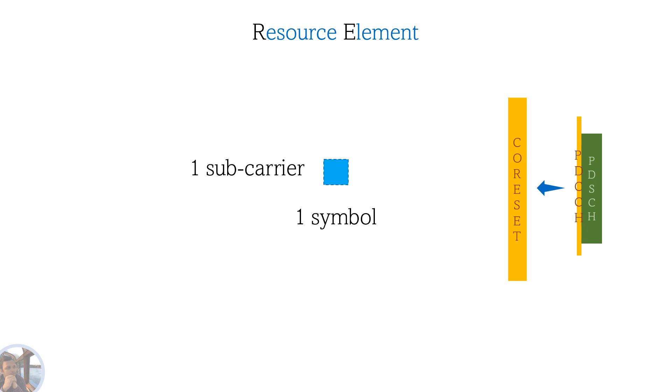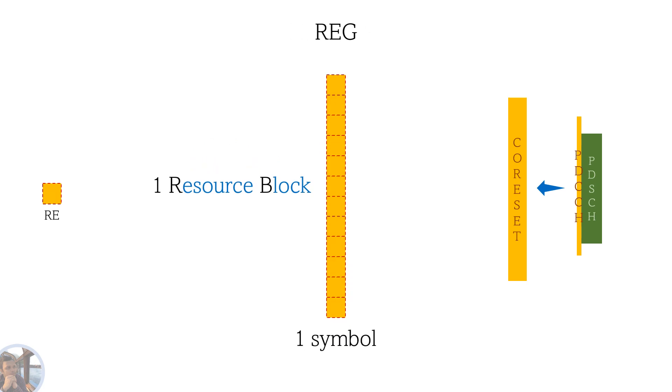Let's start with the smallest element. Resource element. It's one symbol, one subcarrier in space. Resource element group. REG consists of 12 resource elements: one symbol in time domain and one RB length in frequency domain.